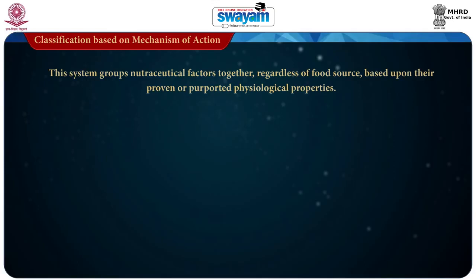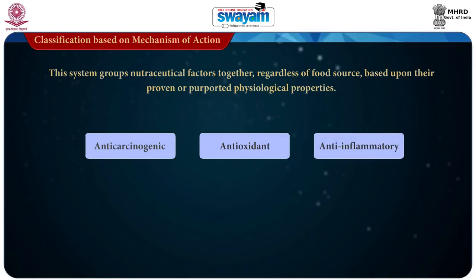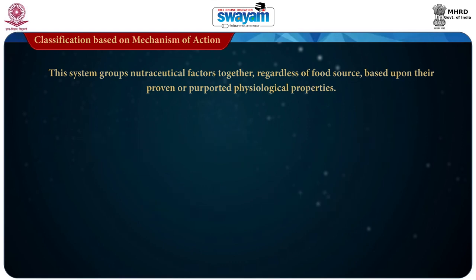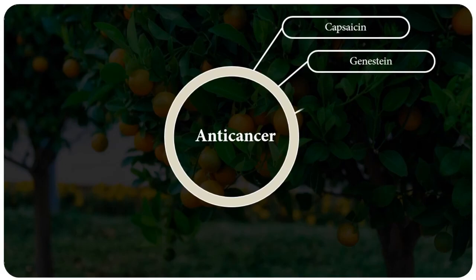Now the next classification is based on mechanism of action. This system groups nutraceutical factors together regardless of food source, based upon their proven or purported physiological properties. Among the classes are anti-carcinogenic, antioxidant, anti-inflammatory, antibacterial, osteoprotective and so on. This classification would be helpful to an individual who is genetically predisposed to a particular medical condition, scientists trying to develop powerful functional foods for such purpose, persons planning diets, and product developers developing new functional foods.